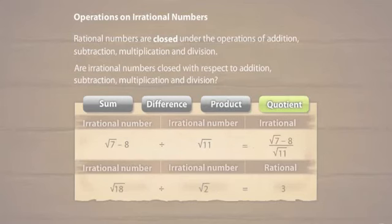When two irrational numbers are divided, the quotient may or may not be an irrational number.